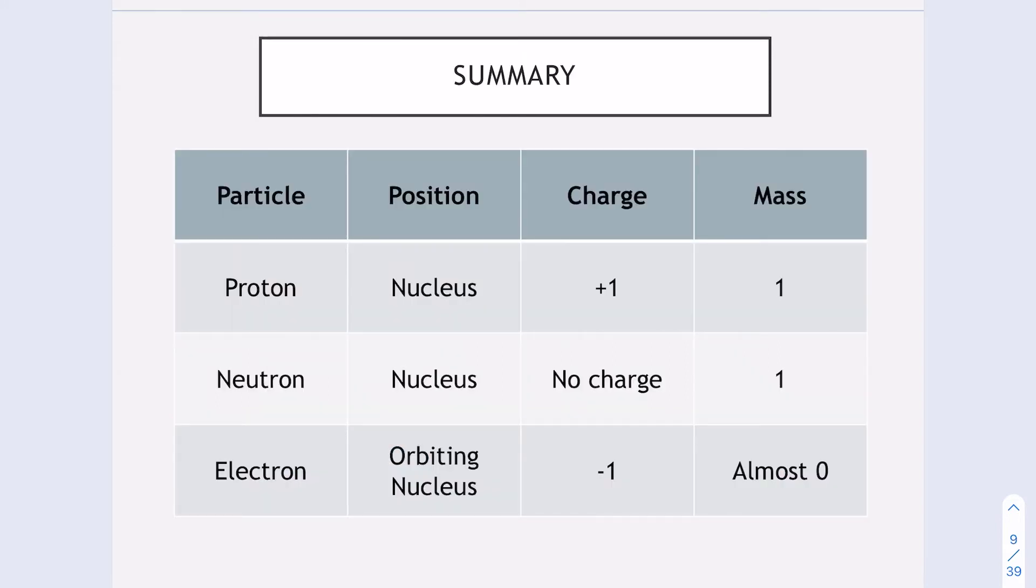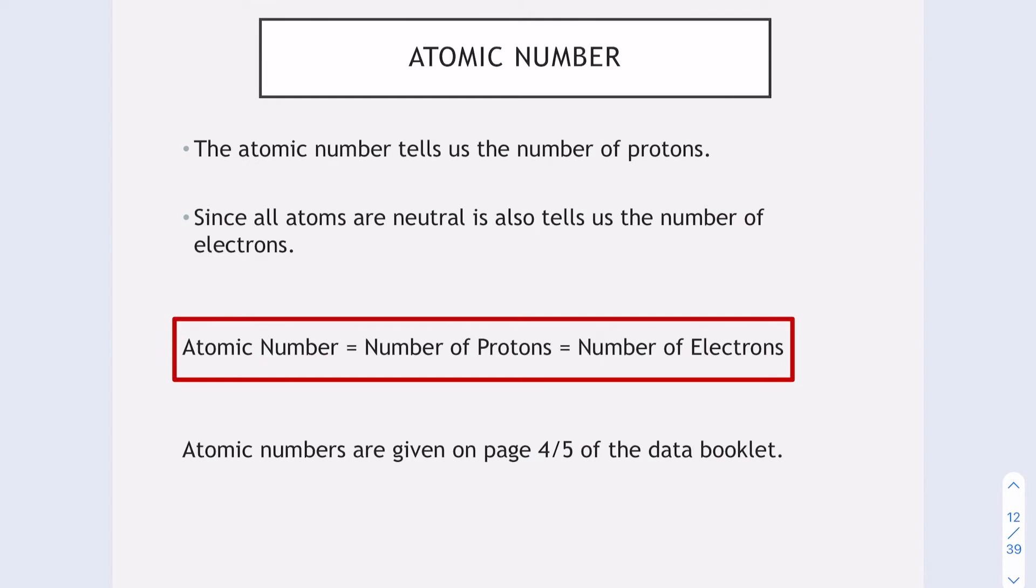Here's a table that explains what I've said over the past few slides. Now we're going to look at some important numbers that help us understand structures of atoms and how to identify different elements.